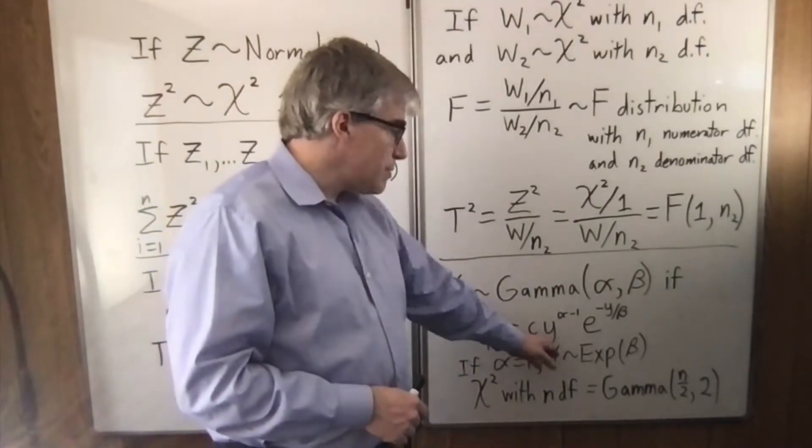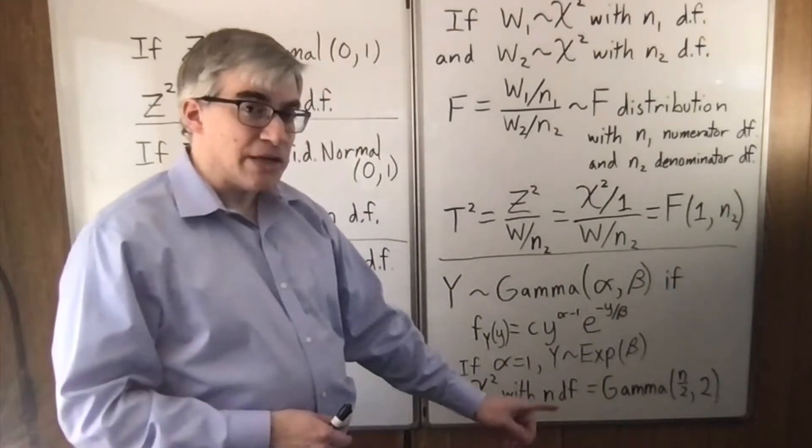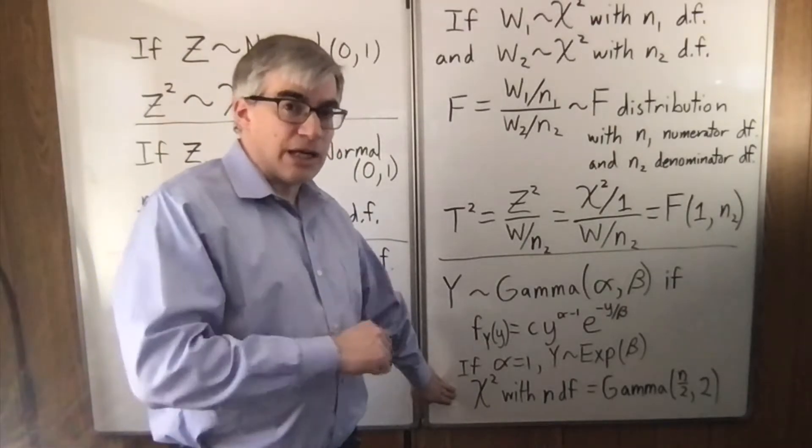If alpha equals 1, then y is exponential. If alpha is n over 2 and beta is 2, we get a chi-square. That is the definition of a chi-square distribution.